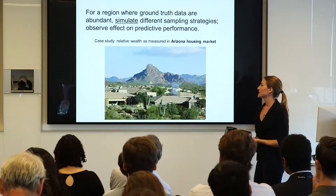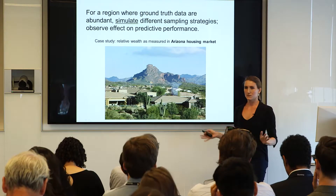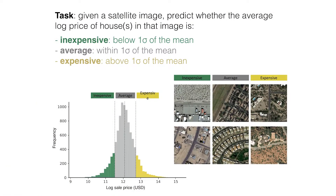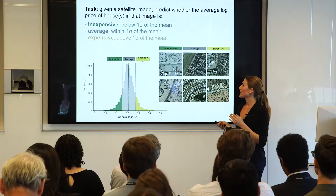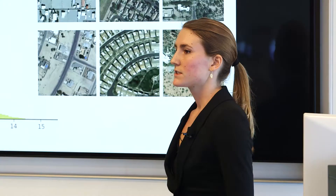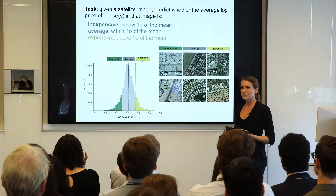Our case study is in the Arizona housing market. We have sale prices of homes from 2010 in Arizona, which we use as ground truth data for our observations. The specific task is: given one of these satellite images, can we classify them into an average range of home prices or one of the two extremes? The point is not to build a really good predictor of home prices — we already have this data. We're asking: given a task that should be fairly simple for a machine learning algorithm, how does it actually perform under different data regimes?